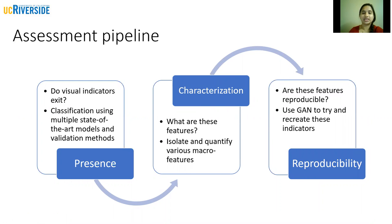The assessment pipeline has three steps. First, we check for the presence of visual indicators that correlate with the mutation. We need to ensure that using only visual input, such as MRI, we are indeed able to predict the mutation status consistently.